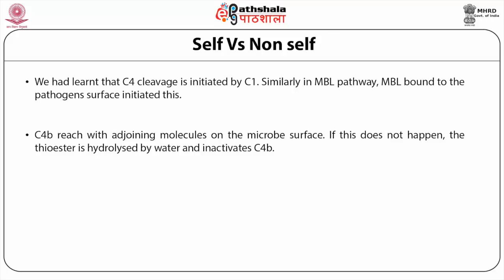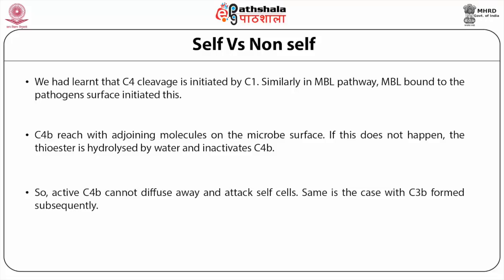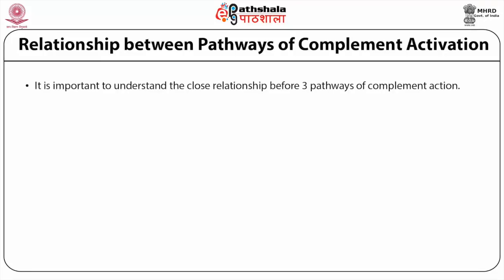C4b reacts with adjoining molecules on the microbe surface. If this does not happen, the thioester is hydrolyzed by water and inactivates C4b. So active C4b cannot diffuse away and attack host cells. The same is the case with C3b formed subsequently. Host cells also have molecules which prevent C3b deposition — this is a safeguard so that complement activation does not hurt host cells.